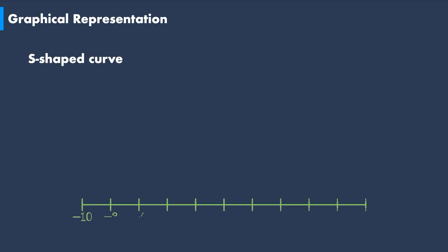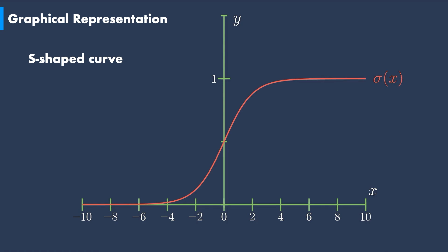Let us see the graphical representation of the sigmoid function. The sigmoid function, as we can see, is an s-shaped curve. For any value of x, the sigmoid function will output a value between 0 and 1.